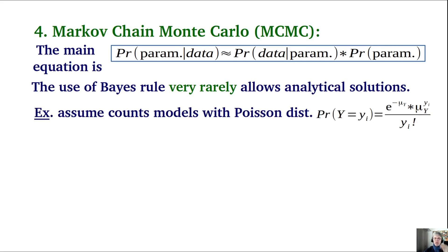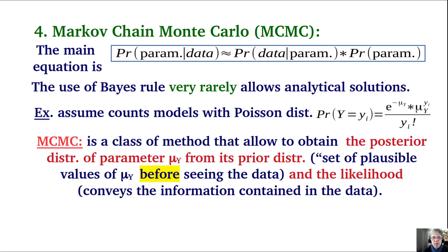MCMC is a class of methods that allow obtaining the posterior distribution of parameter mu from its prior distribution — the set of plausible parameter values before seeing the data — and the likelihood, which conveys the information contained in the data.